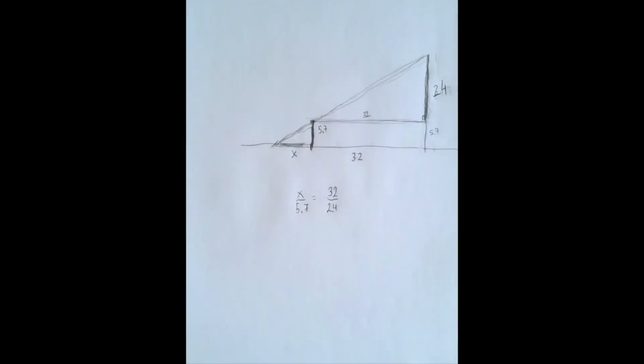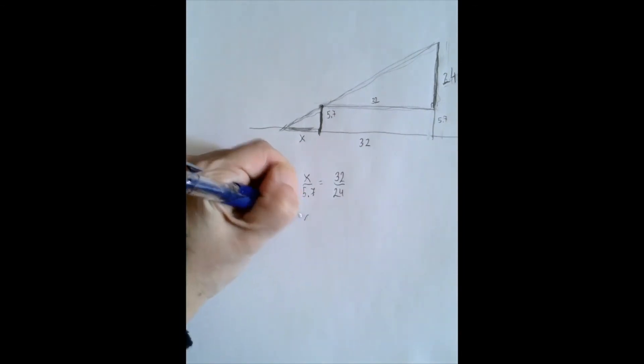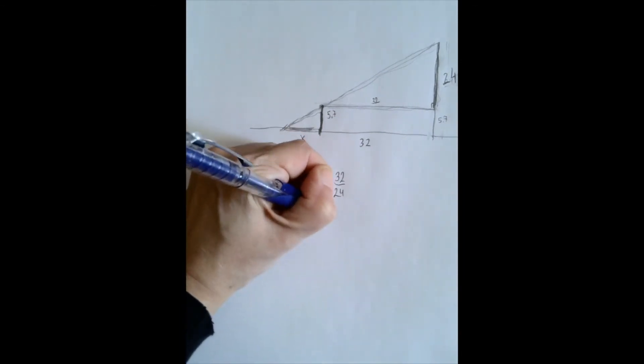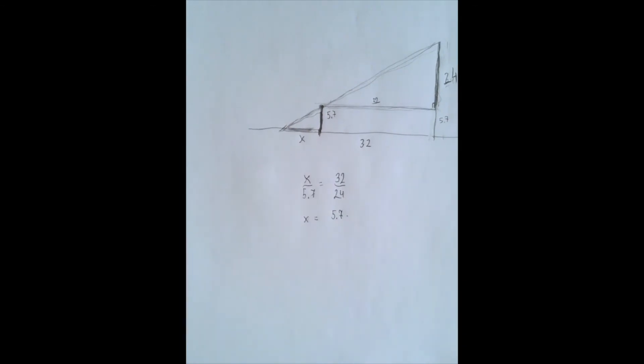That is our 24 already, right? So x is 5.7 times, they're both divisible by 8, so 4 over 3, which is 7.6. Thank you for watching.